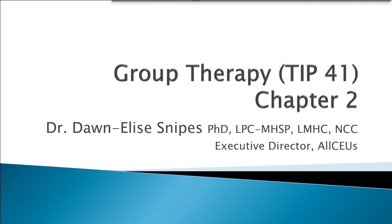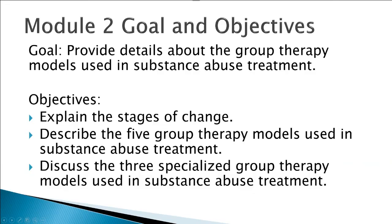Welcome back to the Group Therapy Counseling series, this is Section 2. In this section, we're going to provide details about the group therapy models used in substance abuse and co-occurring disorders treatment. We'll explain the stages of change, describe the five group therapy models used in substance abuse treatment, and discuss the three specialized group therapy models used in substance abuse treatment.